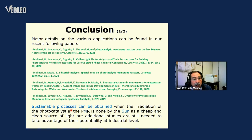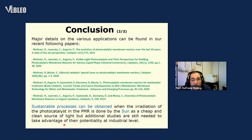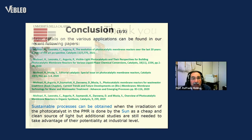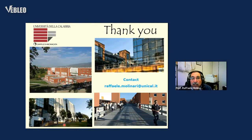At the end, we can say that sustainable processes can be obtained when the radiation of the photocatalyst in the PMR is provided by the sun as a cheap and clean source of light. But additional studies are still needed to take advantage of their potential at the industrial level. Thank you very much for your attention.